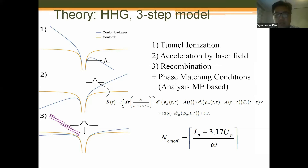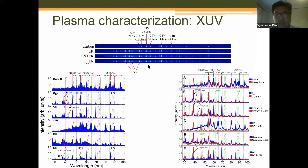This is a result of plasma characterization in the XUV region. We did not expect to see any specific differences in this region, because they all consist of carbon. Indeed, we saw only different carbon lines. For this panel, comparing carbon nanomaterials, the plasma comparison is also shown for materials fixed inside an epoxy resin matrix.